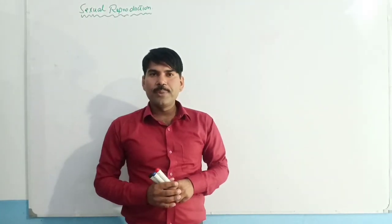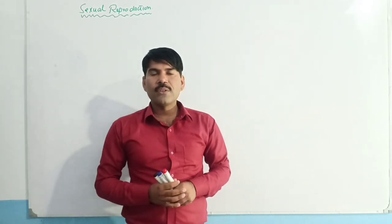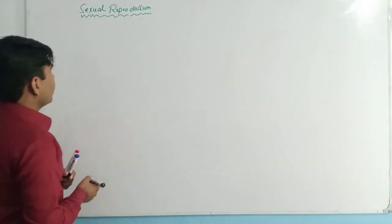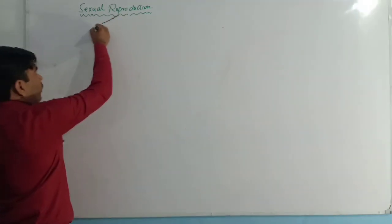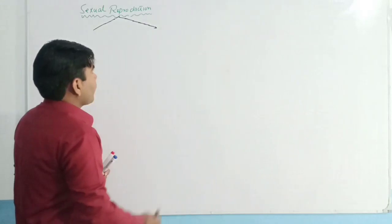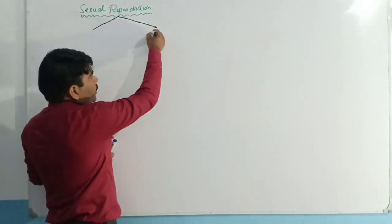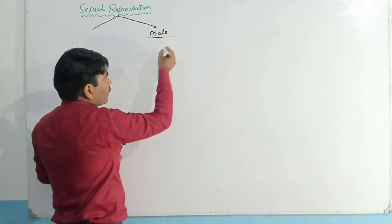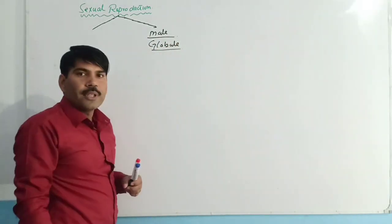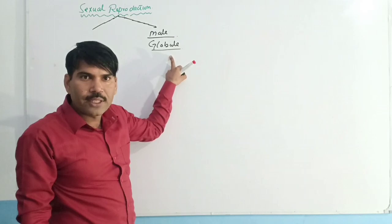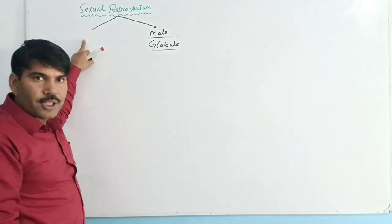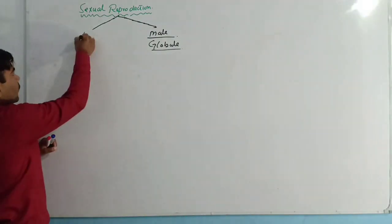We are going to study the female structure of Chara, known as the Nucule, in the context of sexual reproduction. In sexual reproduction, there are two types of sex organs. The male structure is known as the globule, which we studied in the last lecture. In this lecture, we will study the female portion, which is known as the Nucule.